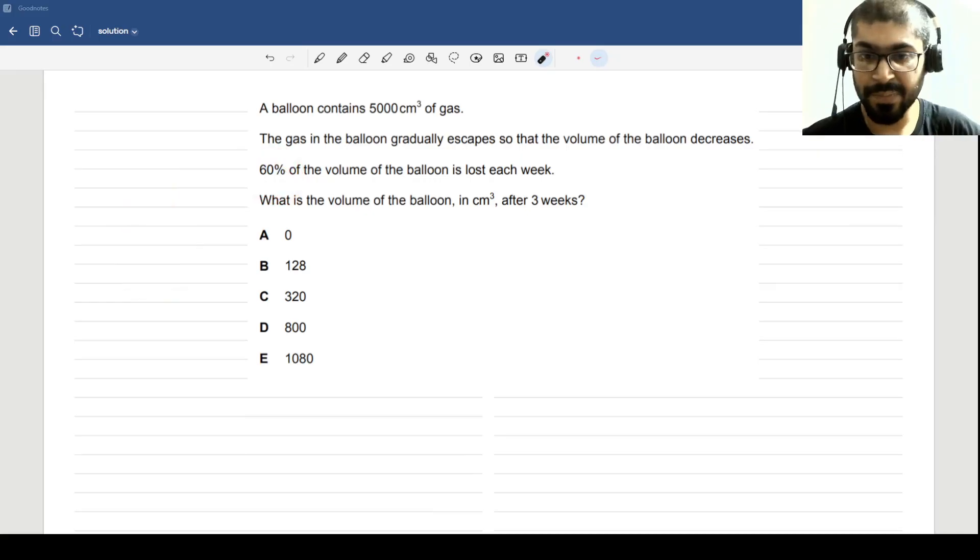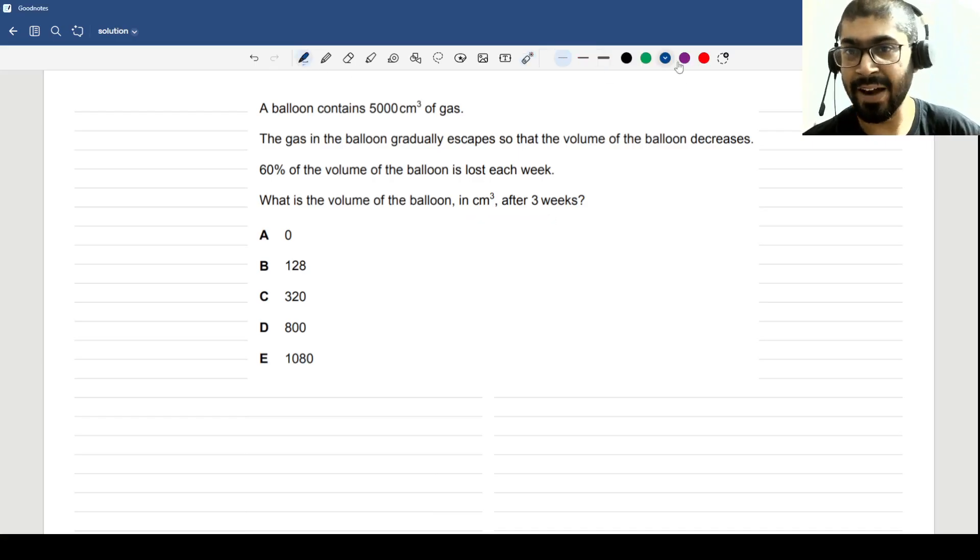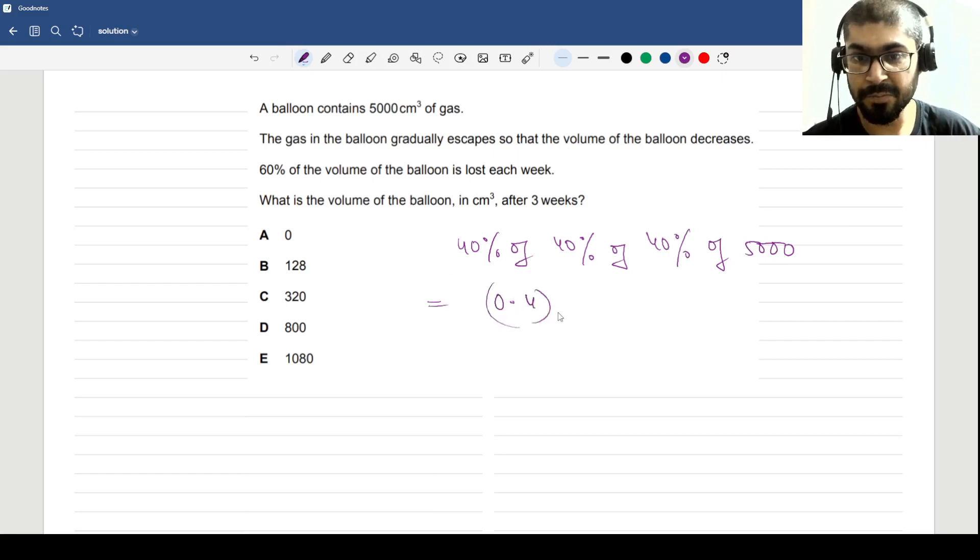What is the volume of the balloon in cm³ after 2 weeks? At every stage 60% is lost, meaning 40% remains. So you are basically doing 40% of 40% of 40% of 5000. Now 40% is 0.4, so you are doing 0.4³ × 5000, and that is in cm³.